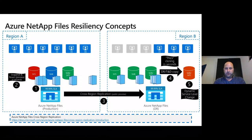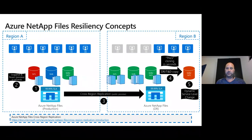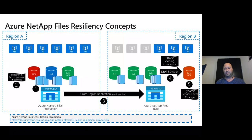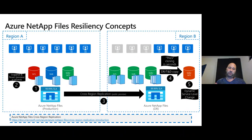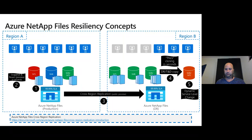Absolutely. Cross-region replication is irrespective of any application. It works with any application that can manage and create application-consistent snapshots, which SAP HANA environments can do. Those snapshots can be created consistently on the primary or production side, and then they are replicated across in an application-consistent fashion, such that any database can be recovered on the DR side with the set SLA based on application-consistent snapshots.